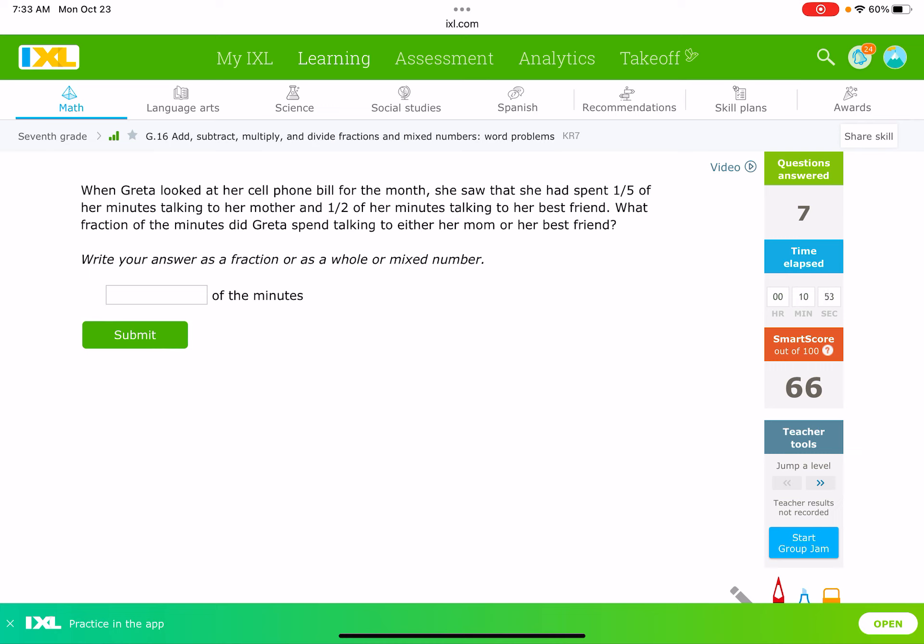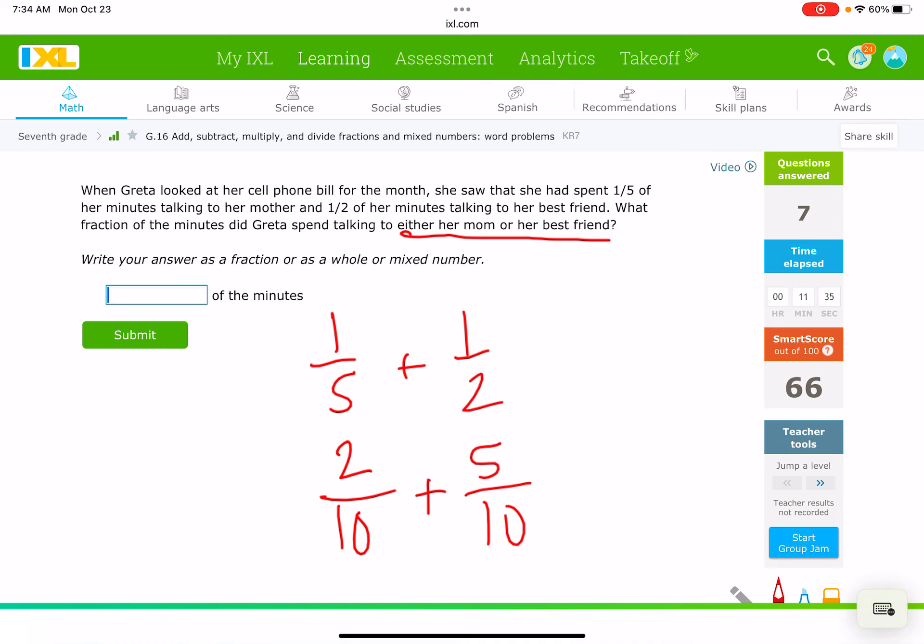When Greta looked at her cell phone bill for the month, she saw that she had spent one-fifth of her minutes talking to her mother and a half of her minutes talking to her best friend. What fraction of the minutes did Greta spend talking to either her mom or her best friend? So, we want to figure out the total there. So, we're going to add those again. So, we're going to do ⅕ plus ½. So, I can get a common denominator. 2 doesn't go into 5, so I've got to find another common denominator. The easiest one here would be 10. 5 and 2 both go into 10. So, ⅕ is the same thing as 2⁄10, and ½ is the same thing as 5⁄10. So, I'm going to add those together. 2⁄10 plus 5⁄10 is 7⁄10.